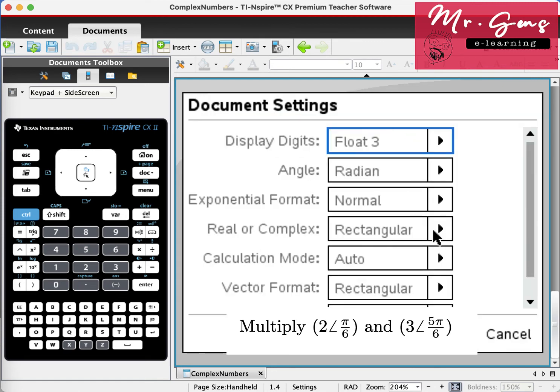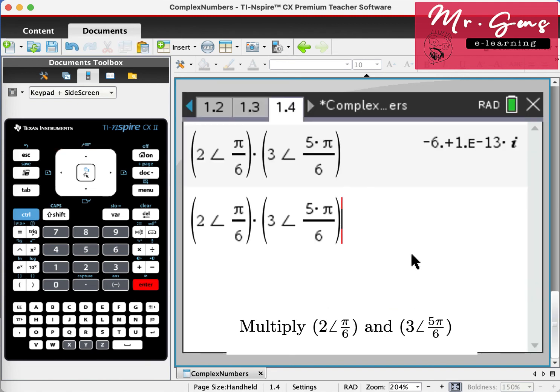If I come to document settings and change it to polar, our answer will be in the Euler form.